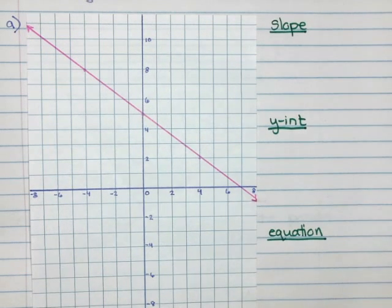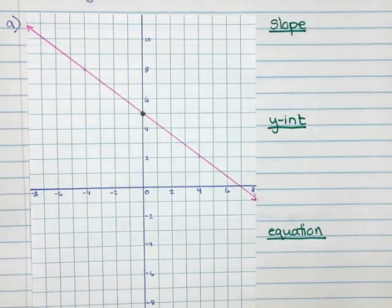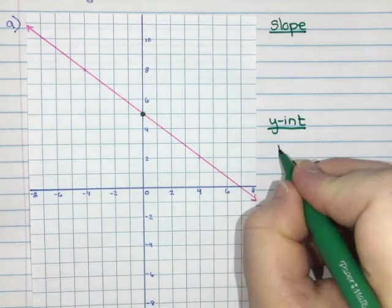When you have a graph, the easiest thing to find is the y-intercept. It is where it crosses the y-axis, which would be right there. So my y-intercept is the number five, so I'm going to say b, which is the letter we assign for y-intercept, equals five.